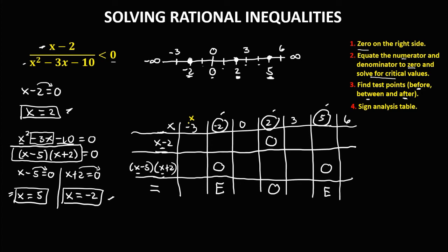For the test point x equals negative 3: the numerator x minus 2 gives negative 3 minus 2, which is negative 5 — sign is negative. For x minus 5: negative 3 minus 5 is negative 8 — negative. For x plus 2: negative 3 plus 2 is negative 1 — negative. Negative times negative is positive. Then negative divided by positive gives a negative result.